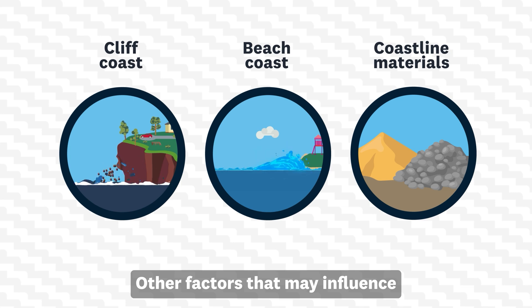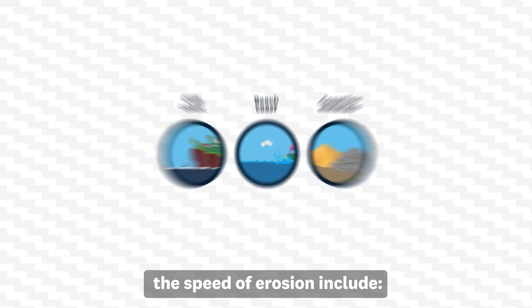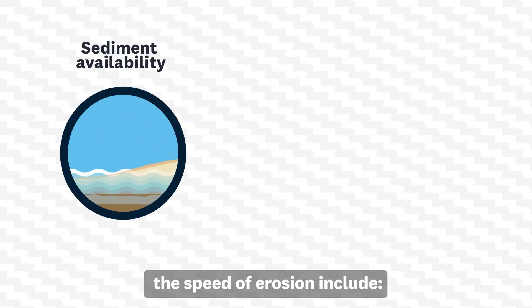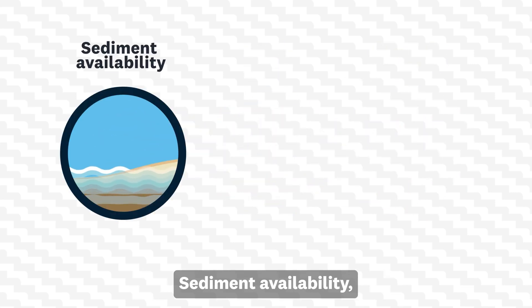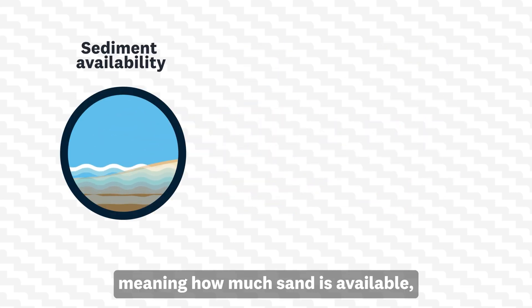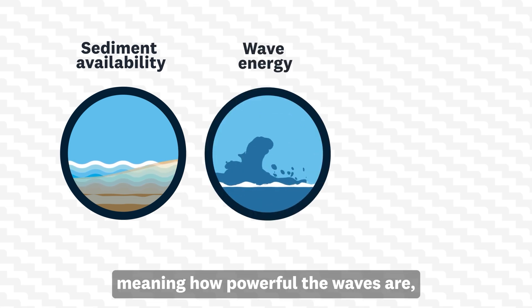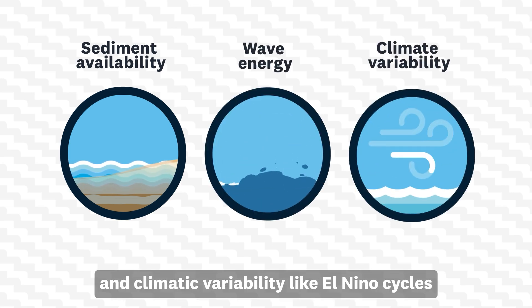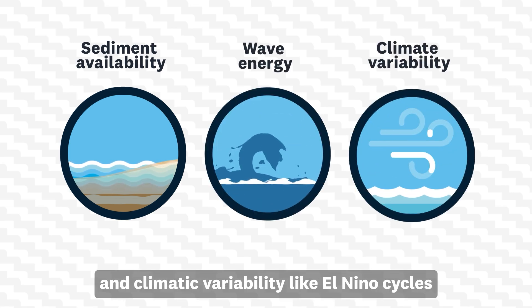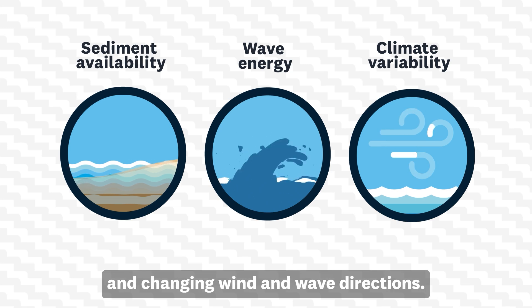Other factors that may influence the speed of erosion include sediment availability, meaning how much sand is available, wave energy, meaning how powerful the waves are, and climatic variability like El Niño cycles and changing wind and wave directions.